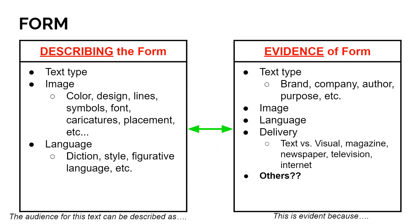When we're describing the form, we're thinking about the text type — is it a novel, a painting, a film? We want to look at the image itself: things like color, design, lines, symbols, fonts, caricatures. We want to think about the language being used — that's the word choice or diction, the connotation, the style, those devices and techniques, the figurative language. To find evidence of form, we're thinking about branding, commercial associations, the specific author, the purpose, images being used, the language itself, and the delivery — is it a text or an image? Where is it being distributed — in a magazine, a book, some other capacity, online perhaps?